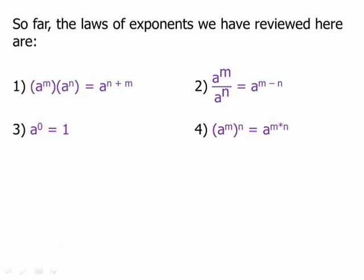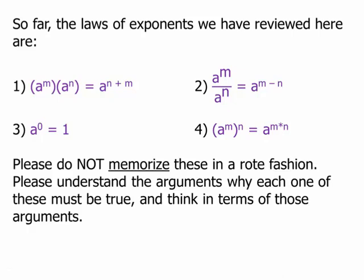So far, the laws of exponents we have reviewed are: product of two powers means add the exponents; quotient of two powers means subtract the exponents; a to the zero equals one; and power to a power means multiply the exponents. Please do not memorize these in an abstract rote fashion — please understand the arguments. Go back to the fundamental definition of what an exponent is, understand those arguments, think through them, and then you'll really understand why they're true.